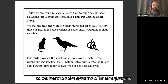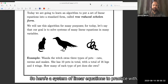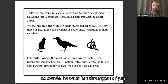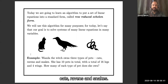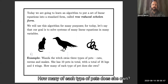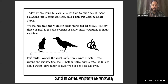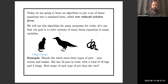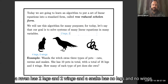So we want to solve systems of linear equations. Here's a system to practice with. Wanda the witch has three types of pets: cats, ravens, and snakes. She has 10 pets in total, with a total of 16 legs and four wings. How many of each type of pet does she own? A cat has four legs and no wings, a raven has two legs and two wings, and a snake has no legs and no wings.